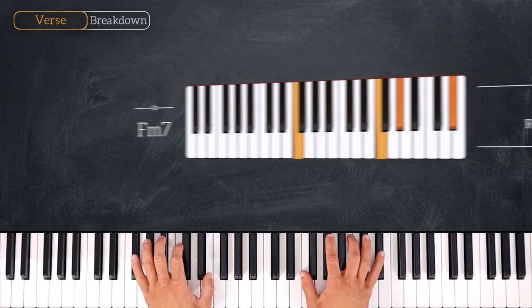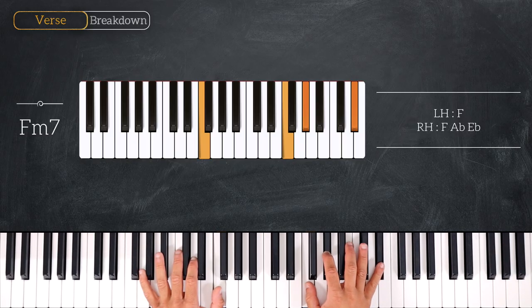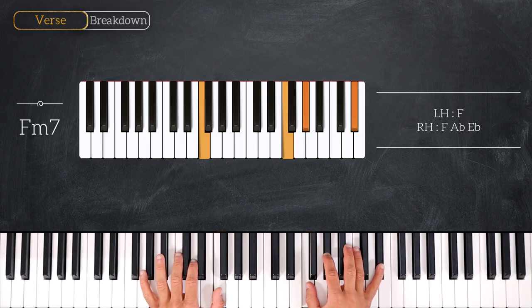We start by playing an Fm7 chord, playing F on the left hand and F, Ab and Eb on the right hand. And this will be our first degree since we are in the key of Fm.